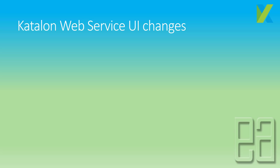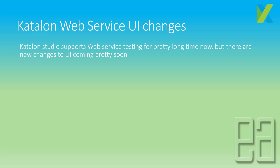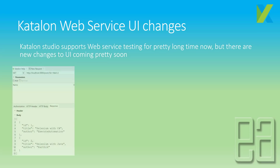Katalon web service UI changes are going to be the biggest change for this release — not in functionality, but in the look and feel of the web services side. Katalon Studio has supported web service testing for a pretty long time, but there are new UI changes coming soon. If you are on Katalon Studio 5.3 or earlier, the web services UI had a URL field, GET/POST/DELETE commands, parameters, authorization, headers, HTTP body, and response.